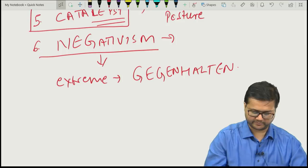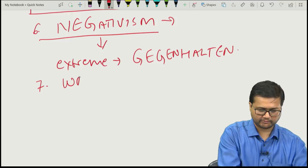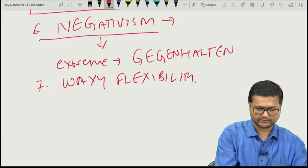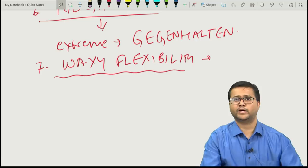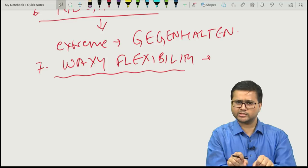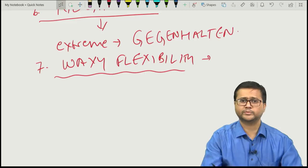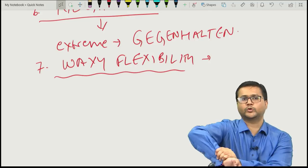There may be waxy flexibility — the person may be moulded like wax. Just like a wax candle, there is initial resistance and thereafter you can mould it as you want. Similarly, the patient's muscle tone has initial resistance and after that you can mould the position as desired. This is the typical sign of waxy flexibility.